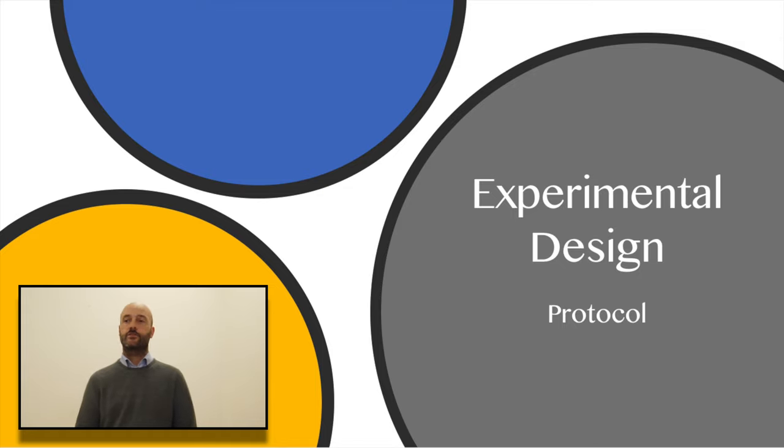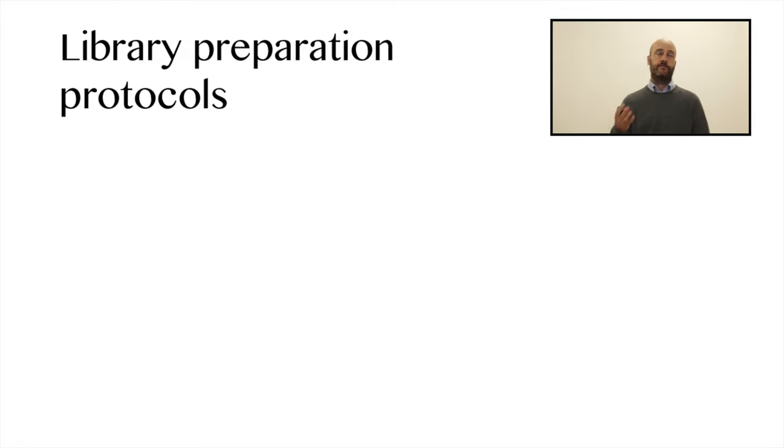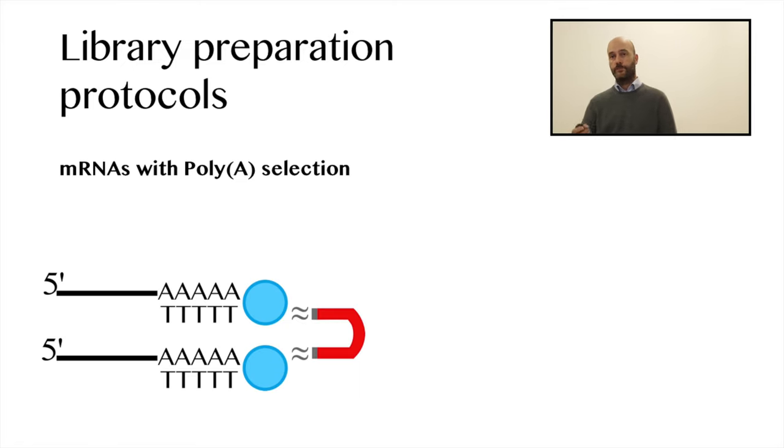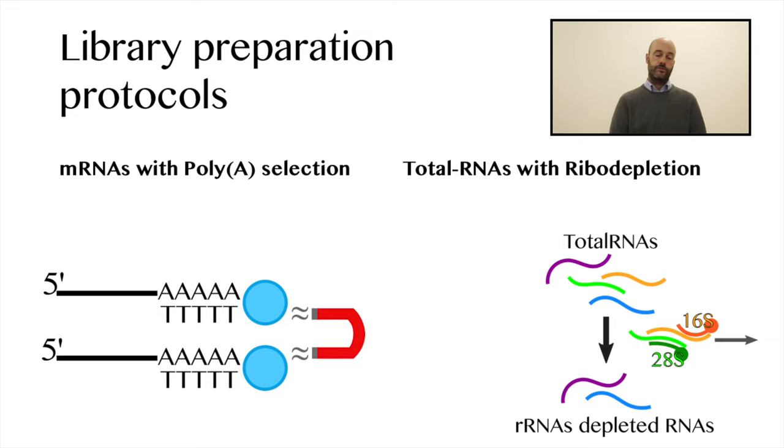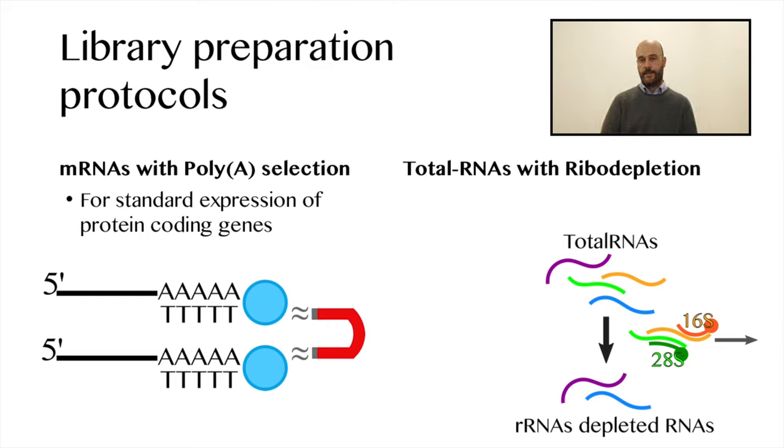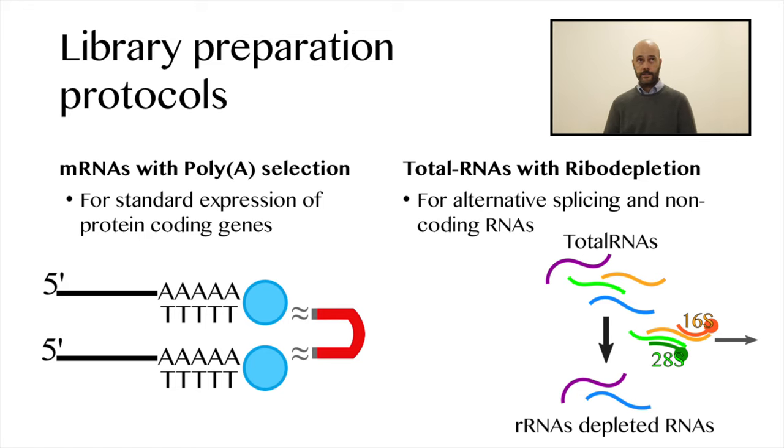The next step in experimental design is to decide the protocol to use to prepare the library. We have two choices. We have a polyA selection in order to obtain only messenger RNAs using polyA tails, or we can use total RNA with ribodepletion in order to remove the most abundant RNAs, which are coming from ribosomal RNAs, from our sample. Of course, it depends on what we want to measure. If we want to measure the standard expression of protein-coding genes mainly, we will go with a polyA-selected RNA library preparation. If we want to study alternative splicing or we want to study non-coding RNAs, since many non-coding RNAs do not have a polyA tail, we should go for total RNA extraction with ribodepletion.